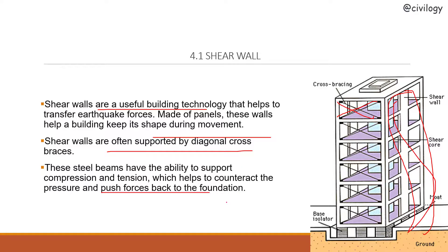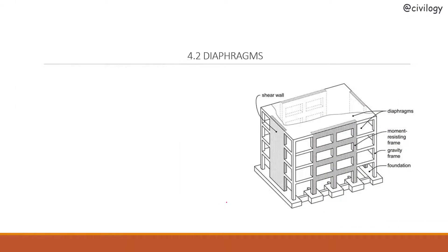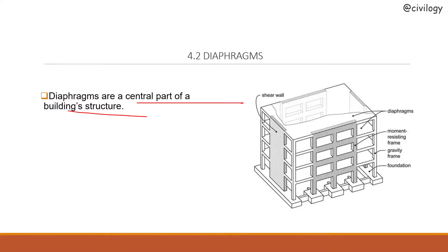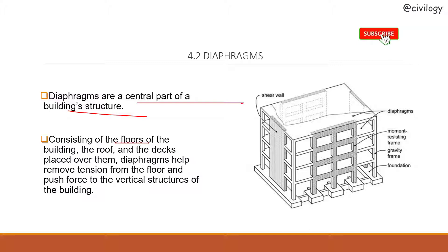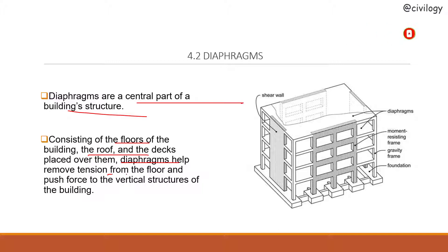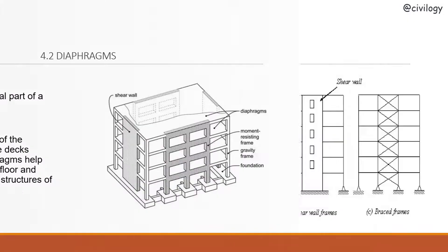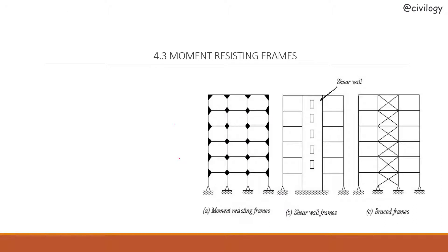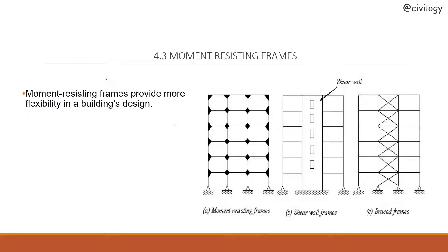Diaphragms are a central part of building structure, consisting of the floors of the building, the roof, and the decks placed over them. Diaphragms help remove tension from the floor and push force to the vertical structures of the building, transferring forces to where they can be managed.